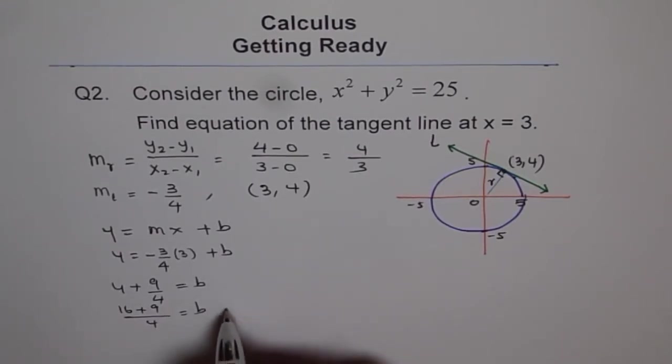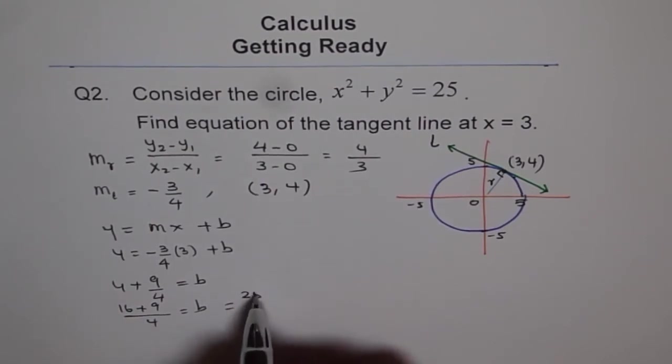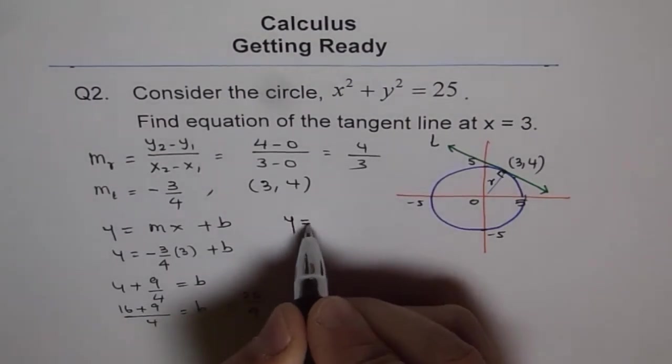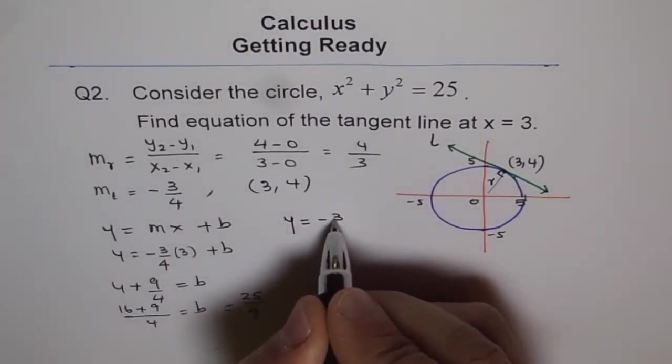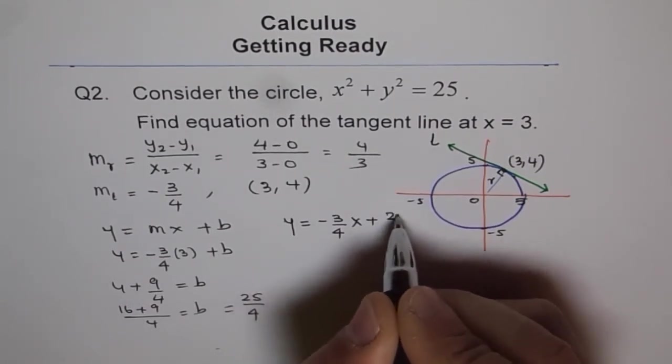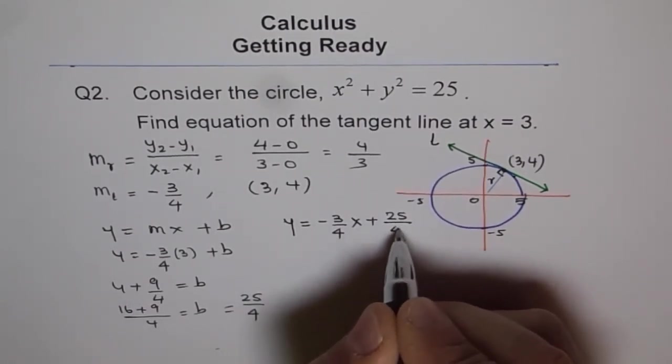So we get, let me write here, so it is 25/4 and therefore the equation of line is Y = -3/4 X + 25/4. That is how we are going to get our equation.